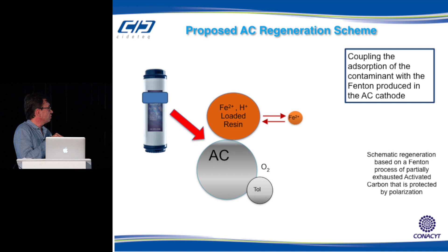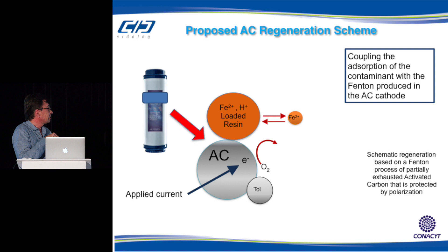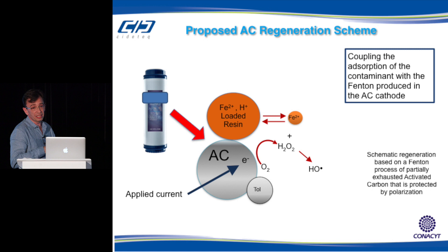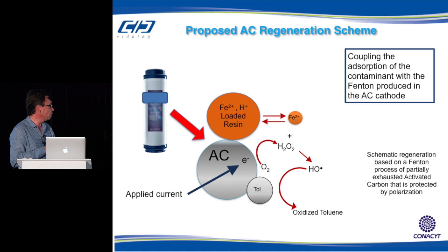What we're proposing is a regeneration scheme in which activated carbon particles are mixed with a resin loaded with protons and Fe²⁺. The iron is in equilibrium. Using the activated carbon as a cathode electrode, we can reduce oxygen in solution via a two-electron process to produce hydrogen peroxide, which combined with the Fe²⁺ forms the Fenton reagent. This produces hydroxyl radicals that clean up the contaminant absorbed by the activated carbon—in this case, toluene.